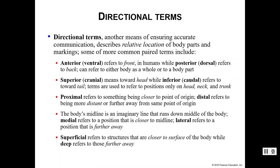Directional terms describe the relationship of one body part to another — we are always comparing the locations of two different body parts, and they come in pairs. Anterior and posterior: anterior refers to the front of the body — your belly button is on the anterior surface. Posterior, or dorsal, refers to the back — your spinal cord is on the dorsal aspect. I tend to interchange anterior with ventral and posterior with dorsal; both are correct.